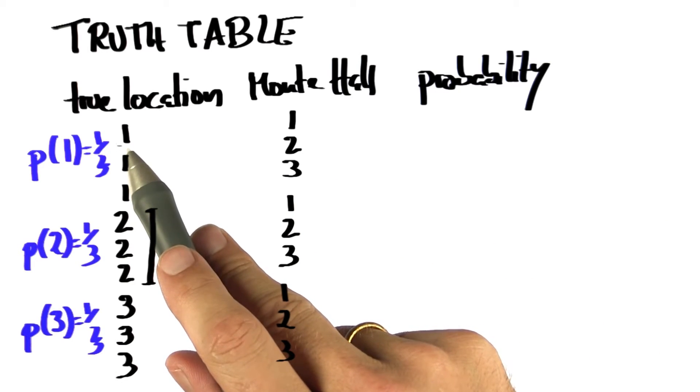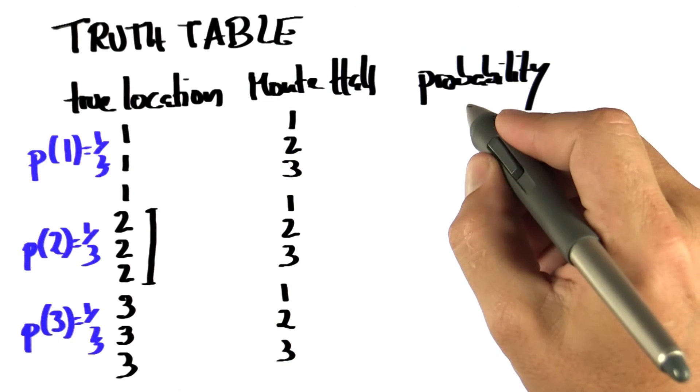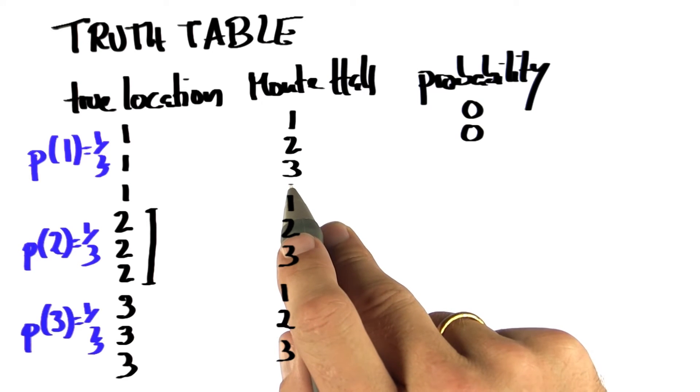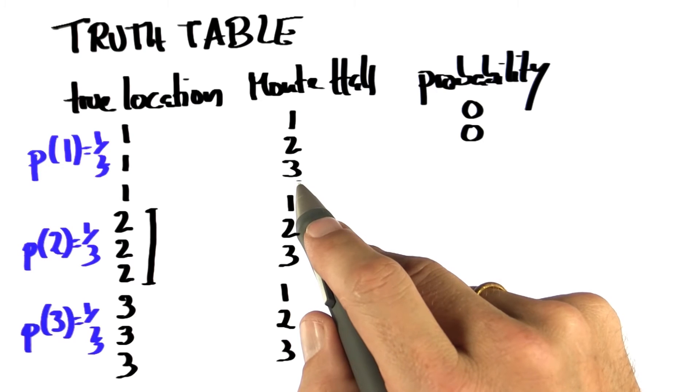If the true location is one, which is a third chance, Monty Hall will not show me location one, probability zero. He won't show me location number two because that's the one I guessed. So the only location he'll show to me will be automatically location three.